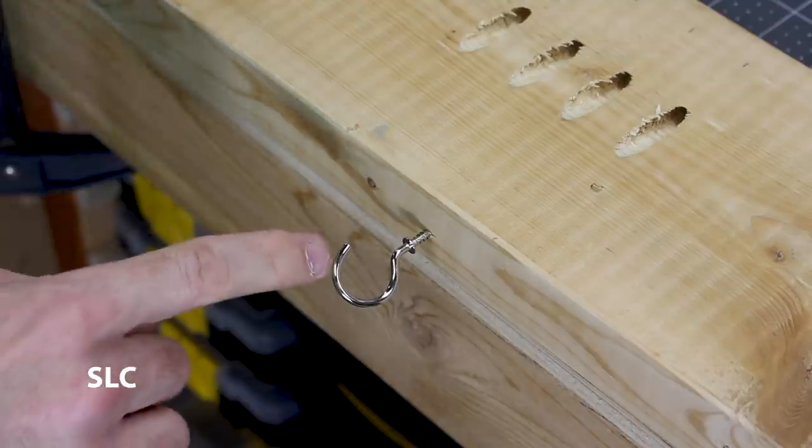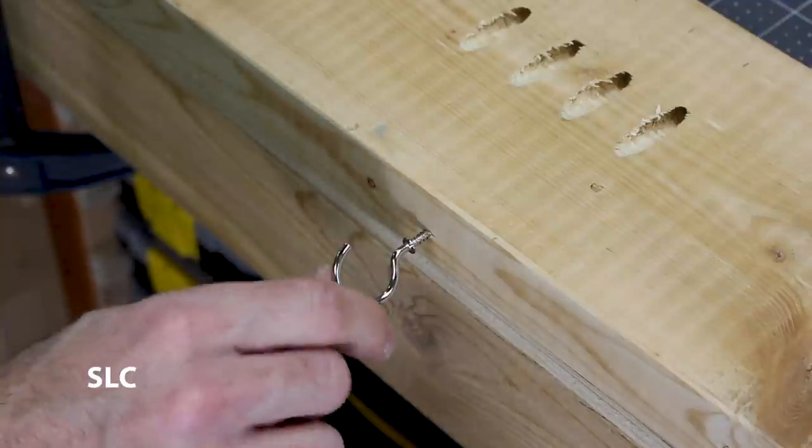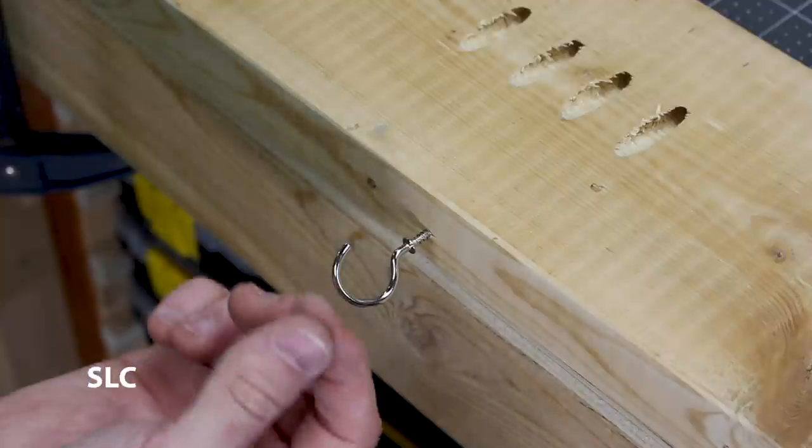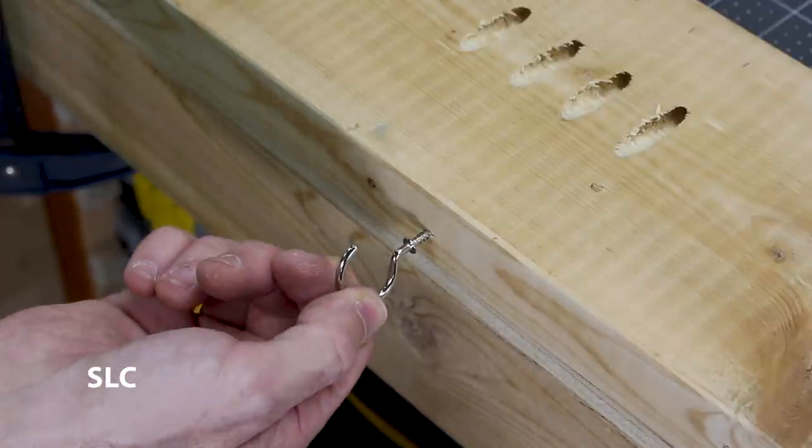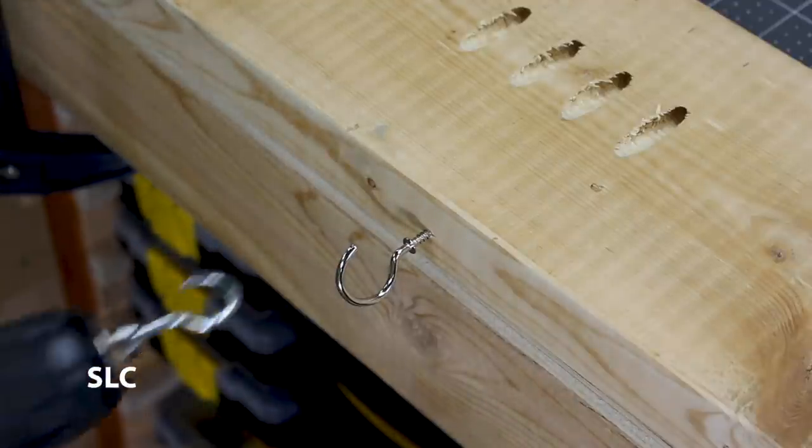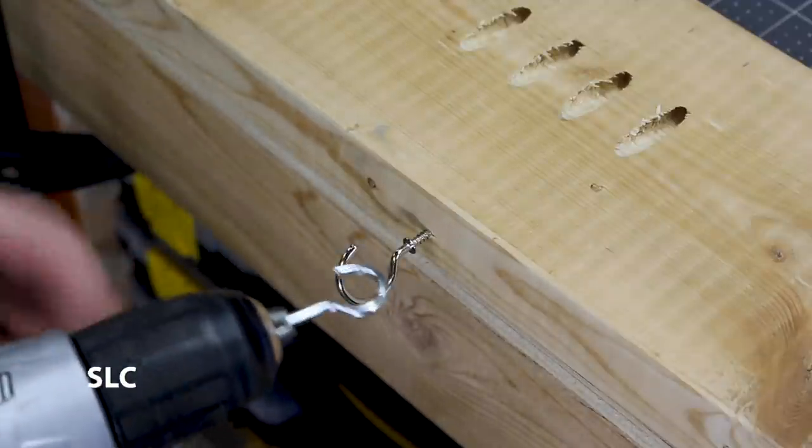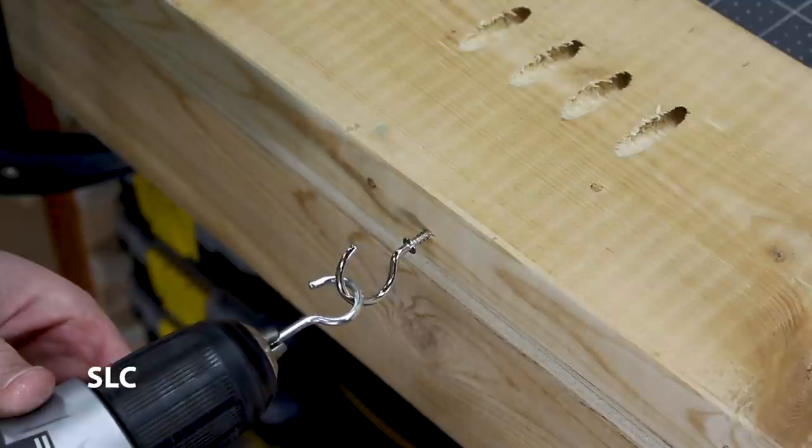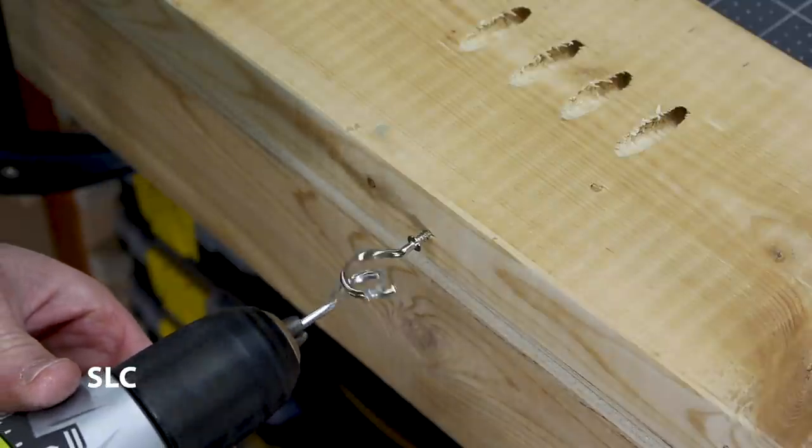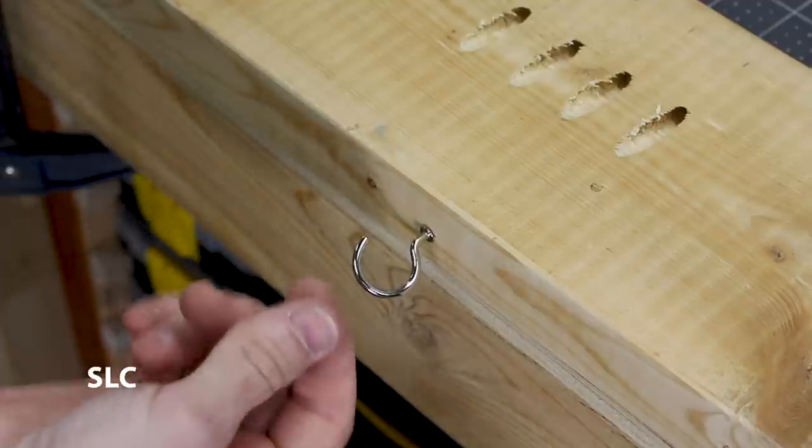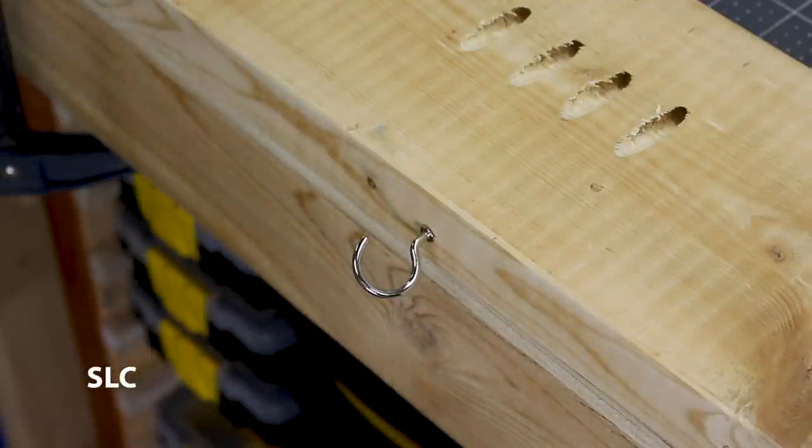Now if you've ever tried to install some of these screw in hooks, if you're just doing one, no big deal, but if you got a bunch of them to install, man your fingers start to hurt and it's just hard to twist it in. Here's a great little tip. Take an additional hook and put it in your drill. Put it on a low setting and just start screwing it in. It's a great way to save your fingers and get the job done quicker.